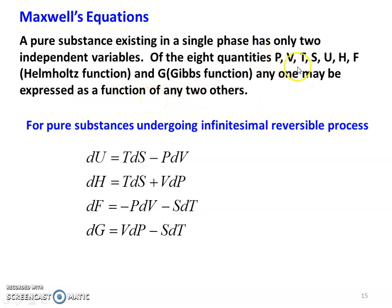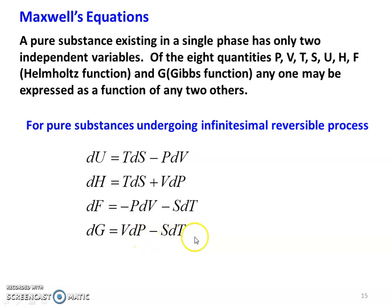The thermodynamic relationship — what is the relationship between all eight thermodynamic quantities? For any pure substance undergoing an infinitesimal reversible process: du equal to T ds minus P dv; dh equal to T ds plus v dp; df (Helmholtz Function) equal to minus P dv minus S dt; and dg equal to v dp minus S dt. These are the fundamental thermodynamic equations based on the first and second laws of thermodynamics, Helmholtz Function, and Gibbs Function.